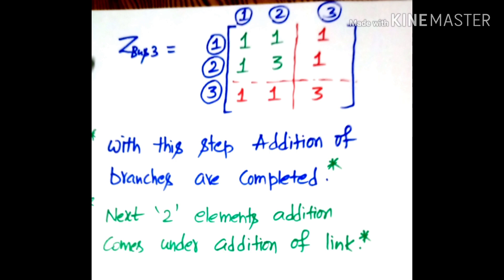With this, the addition of branches is completed. The remaining two elements fall under the addition of links, because they are connected between two already-existing nodes of the partial network.